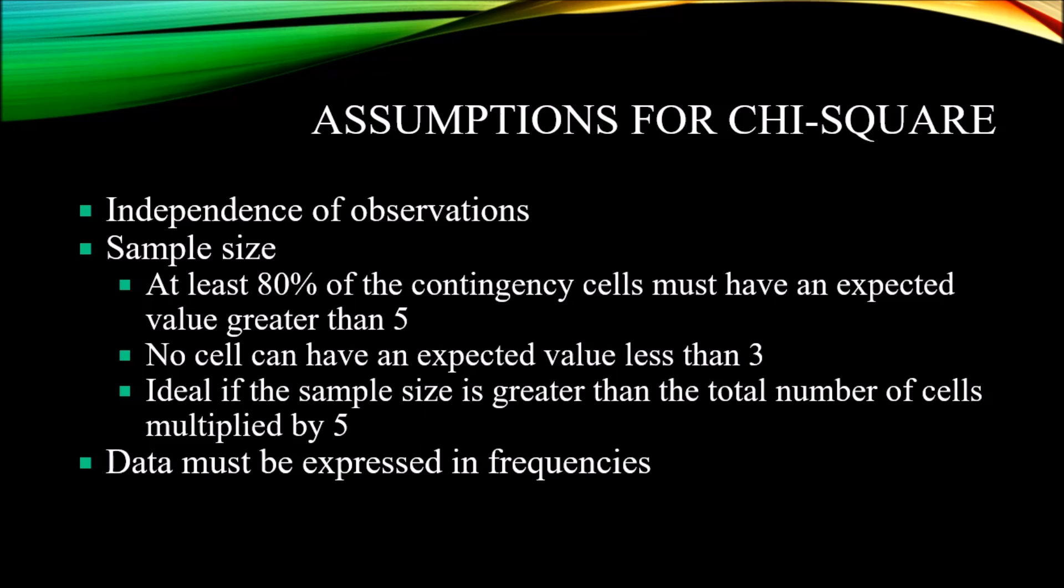A cell cannot be populated with a percentage or some other transformation of the data. Chi-square statistic only works with frequencies.